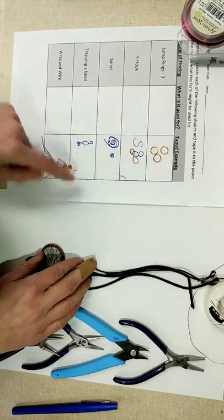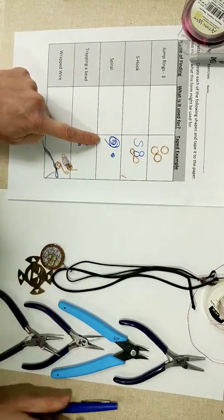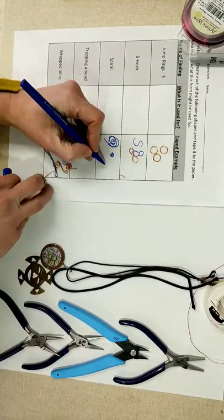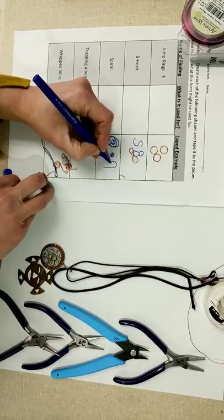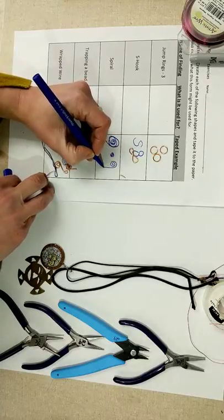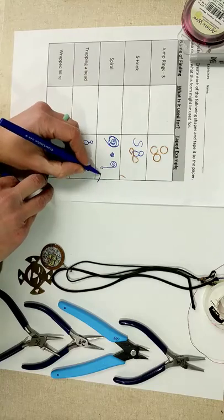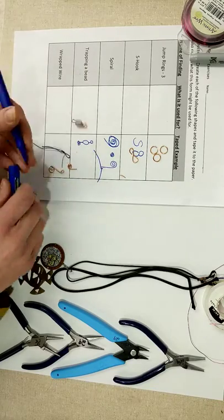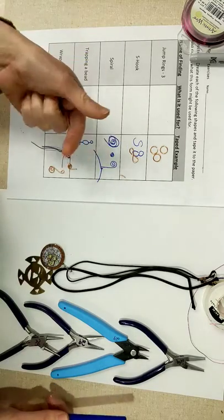And then the last one is a spiral. There's an interesting drawing of one right here. It's more of a decorative element. Sometimes you make a spiral with a hook on the other end, and it's a way that you could have it hang from thread.